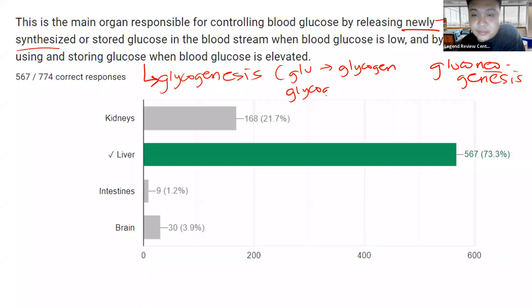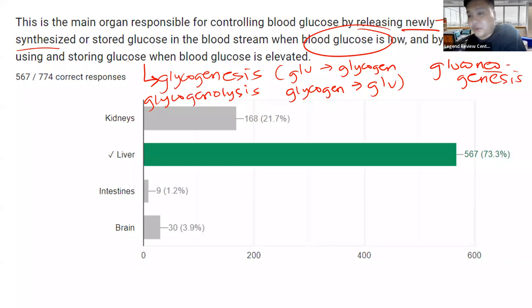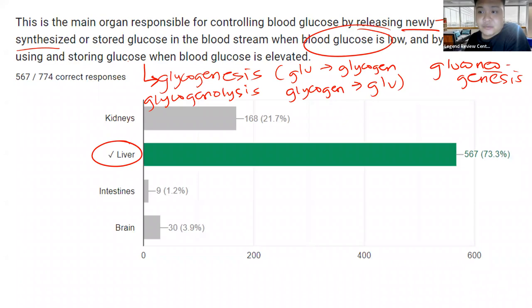If we reverse that, glycogen is converted back to glucose — this is glycogenolysis. Whenever you hear 'lysis,' it means breakdown. Pag sinabi nating glycogenolysis, breakdown of glycogen and release of glucose. So in this question, we are looking for an organ capable of gluconeogenesis, glycogenolysis, and glycogenesis — and this organ is the liver. Very important in your carbohydrate metabolism.